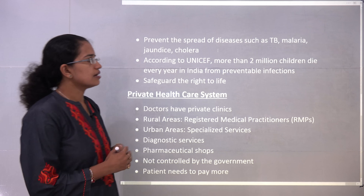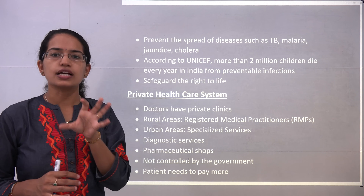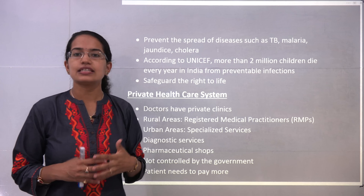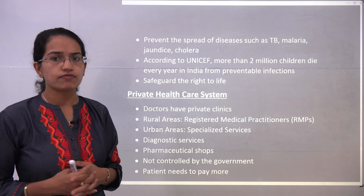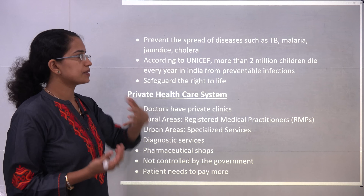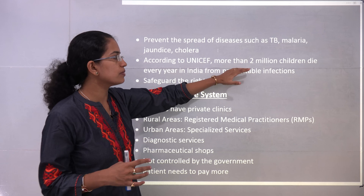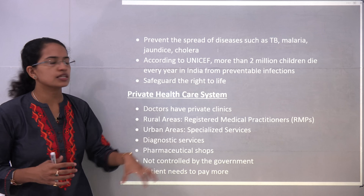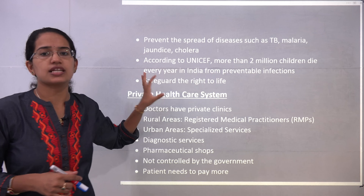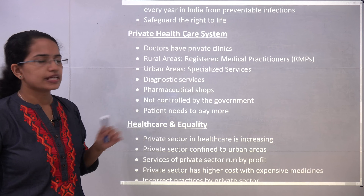Some of the basic ideas we are focusing on under the healthcare system in India include safeguarding the right to life and preventing the spread of diseases. UNICEF says that more than 2 million children die every year in India due to preventable infections. These are some of the things that must be looked into. Now moving on to the private healthcare system.